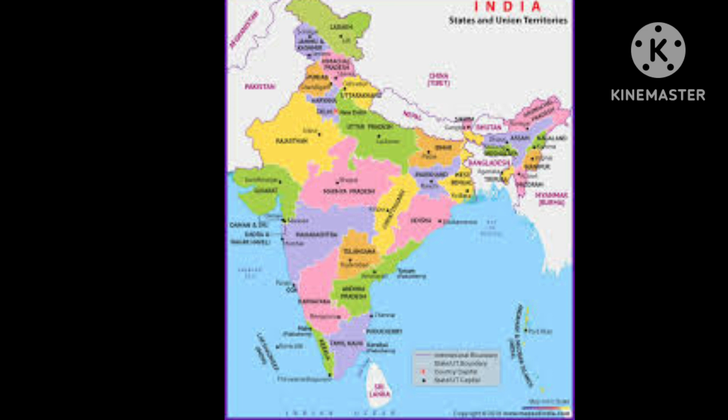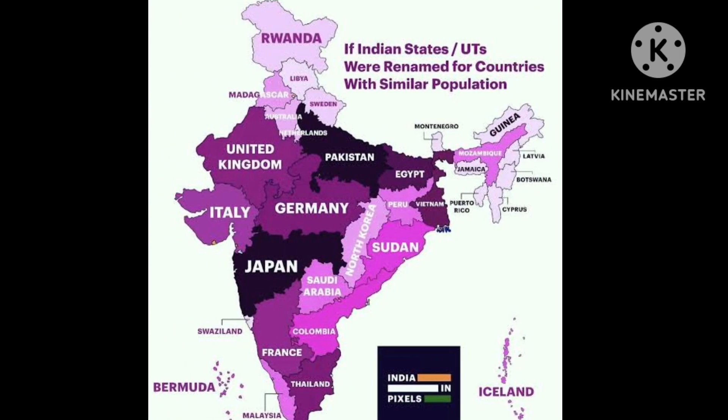This is the map of Indian states' population — what if Indian states and UTs were renamed for countries with similar population. There are many varieties of population in India. Some, like Uttar Pradesh and Maharashtra, are close to Japan and others.